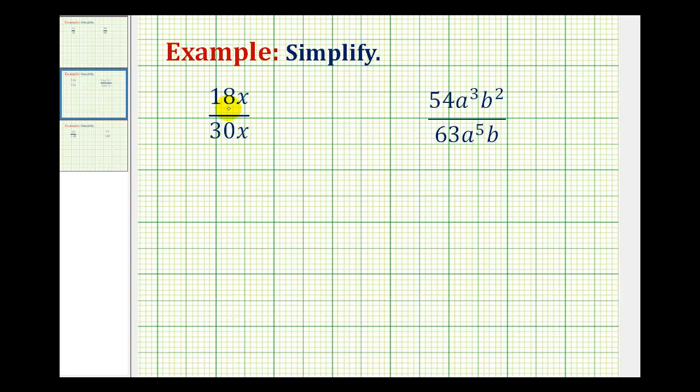So we'll start by writing out the prime factorization of both the numerator and denominator. We'll make a factor tree for 18. Well, 2 times 9 is 18, 2 is prime, and 3 times 3 is equal to 9, and these are prime.